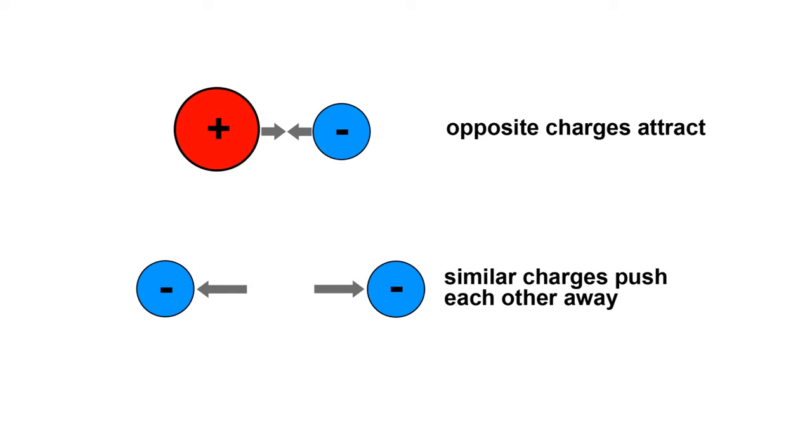The terms positively charged and negatively charged are arbitrary and the important thing to know is that things with opposite charges attract each other and things with the same charge repel each other. So the positive nucleus of the atom will attract negative electrons but if electrons get too close to each other they'll push each other away.